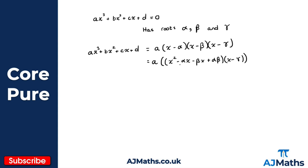What I need to do now is expand this quadratic with this final term, and as you can see it's very easy to make a mistake. So I'm going to get a lots of x cubed, minus alpha x squared, minus beta x squared, minus gamma x squared.